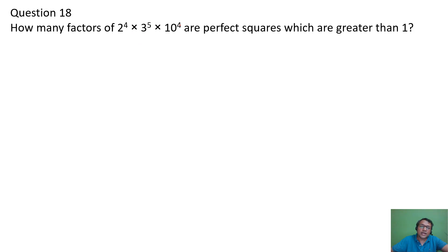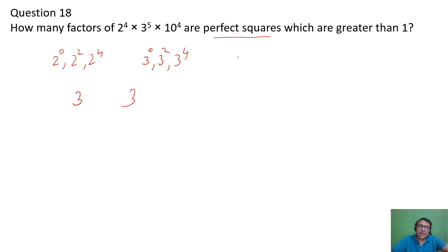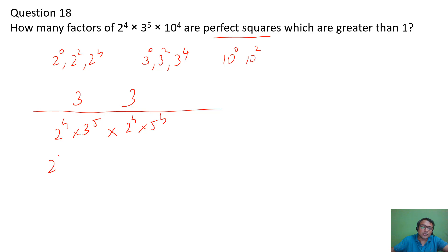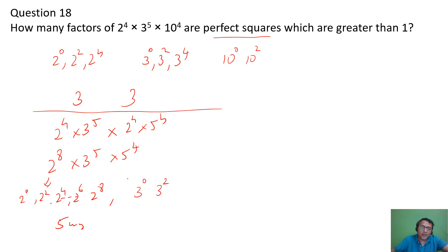Next problem: how many factors of 2⁴ × 3⁵ × 10⁴ are perfect squares greater than 1? For perfect squares, all prime factor powers must be even. First, break 10⁴ = 2⁴ × 5⁴, giving the overall expression as 2⁸ × 3⁵ × 5⁴. For 2⁸, even powers are 0,2,4,6,8 — 5 ways. For 3⁵, even powers are 0,2,4 — 3 ways. For 5⁴, even powers are 0,2,4 — 3 ways. Total = 5×3×3 = 45 ways.